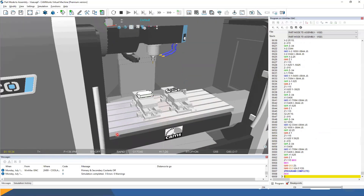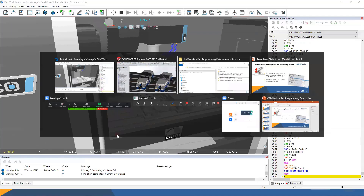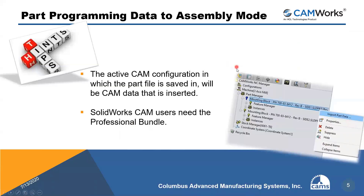That's a quick tip. Remember: the active CAM configuration in which the part file is saved will be the CAM data that's inserted into assembly mode. SOLIDWORKS CAM users need the Professional bundle. And it's done by right-clicking on the part file in the assembly and selecting Import Data.